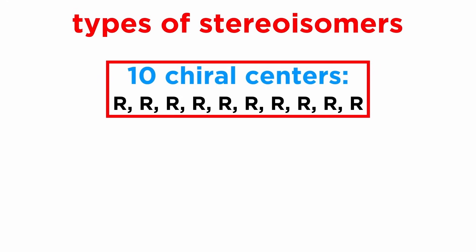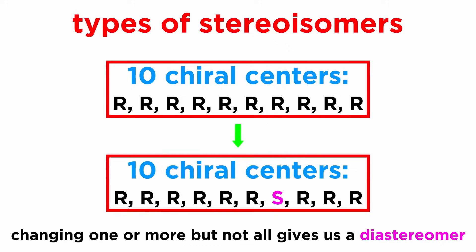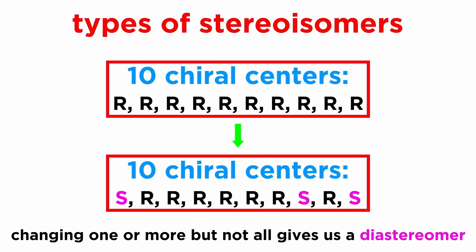If we have a molecule with 10 chiral centers, all with R configuration, changing the configuration of every single chiral center to get 10 S configurations will give us the enantiomer. Changing one or more, but not all, in any combination, will give us one of the many possible diastereomers.